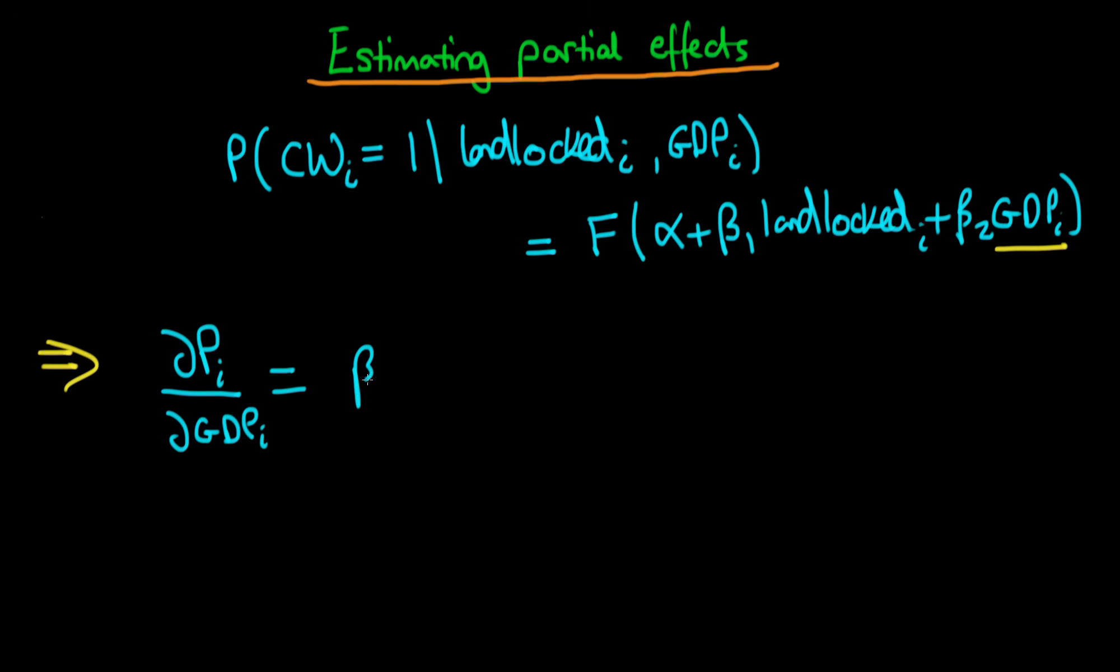we are going to get beta2 times f of alpha plus beta1 times whether the country was landlocked, so landlocked here is obviously a dummy variable, plus beta2 times the GDP of that country. And just so I'm being absolutely clear here, little f means the first differential of big F.